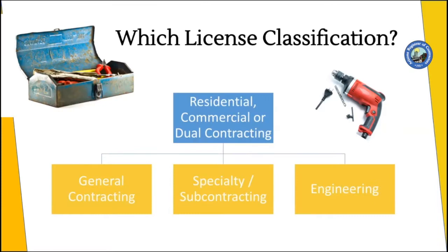The next step is deciding what license classification you're going to be applying for. We have 155 different license classifications that cover a wide variety of scopes of work. If you don't know what license classification you need to apply for, you can search on our website and read the different classification descriptions. You also need to know whether you'll only be doing residential work, only commercial work, or both — in which case you'd want to apply for a dual license.